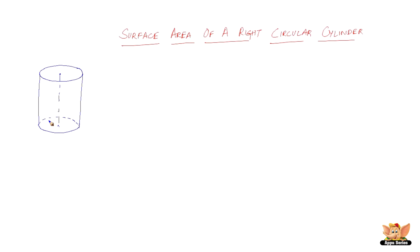In the case of cube and cuboids, we call it the lateral surface area. This is also the lateral surface area, but for clarity's sake we can call it curved surface area. So how are we going to find out or measure the surface area of a right circular cylinder?